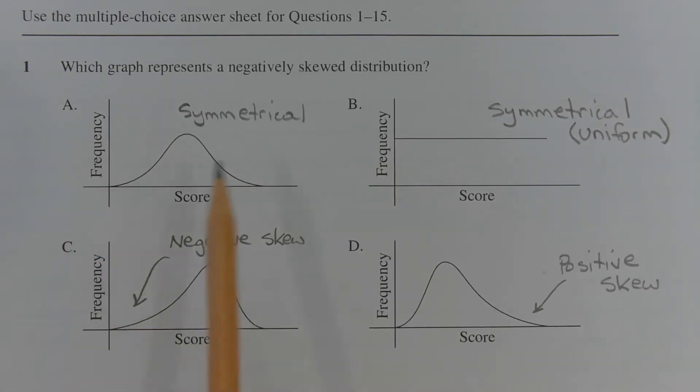Option A describes a symmetrical distribution because the left hand tail is roughly equal in length to the right hand tail.